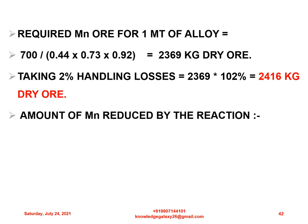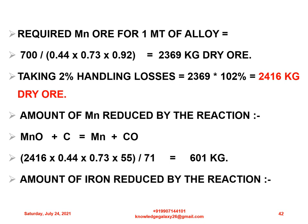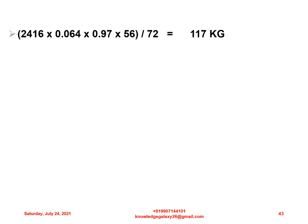Amount of manganese reduced by the reaction MnO + C → Mn + CO: 2,416 × 0.44 × 0.73 × (55 ÷ 71) = 601 kg. To master this equation and material balance, you have to always keep in mind the atomic weights and the equation equilibrium. Amount of iron reduced by the reaction FeO + C → Fe + CO: 2,416 × 0.064 × 0.97 × (56 ÷ 72) = 170 kg.